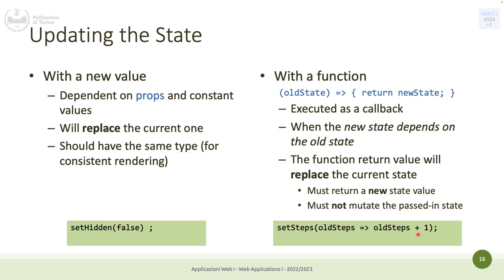The function must return the entire state, not just a portion — because it replaces the entire state. You must not mutate the passed state: you pick the state, add something, and return the result without editing the current state's value. For complex objects like arrays, you cannot mutate the array — you have to create a new array that is a copy of the existing one with the different value, and return the copy.